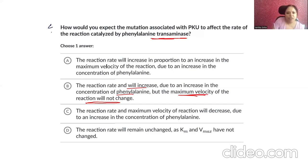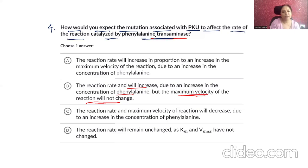Question three: How would you expect the mutation associated with PKU to affect the rate of the reaction catalyzed by phenylalanine aminotransferase? We are talking about PAH. How would you expect the mutation associated with PKU to affect the rate of the reaction catalyzed by phenylalanine aminotransferase?